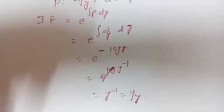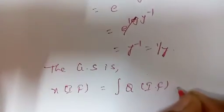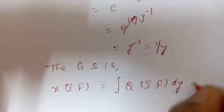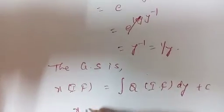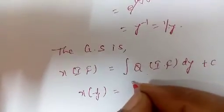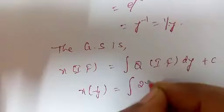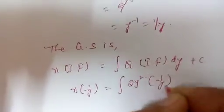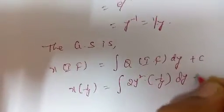The integrating factor is 1/y. Therefore the general solution is x · (integrating factor) = ∫Q · (integrating factor) dy + c. So x · (1/y) = ∫2y² · (1/y) dy + c.